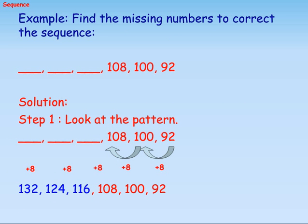Example. Find the missing numbers to complete the sequence: ___, ___, ___, 108, 192. Solution. Step 1: Look at the pattern. Here, the previous number is obtained by subtracting 8 from the given number.